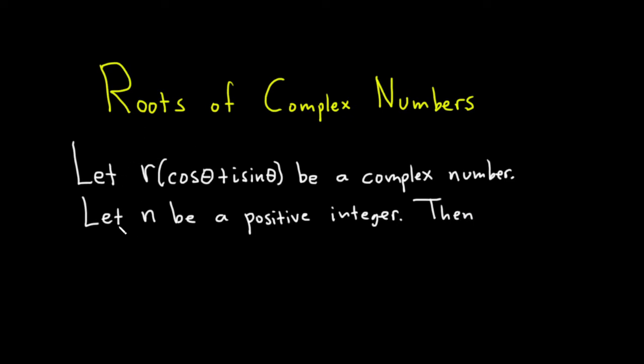Then, our complex number has exactly n distinct roots. So, for example, if n was 2, we would be talking about square roots. If n is 3, we're talking about cube roots. If n is 4, we're talking about fourth roots. n is 5, 5th roots, etc.